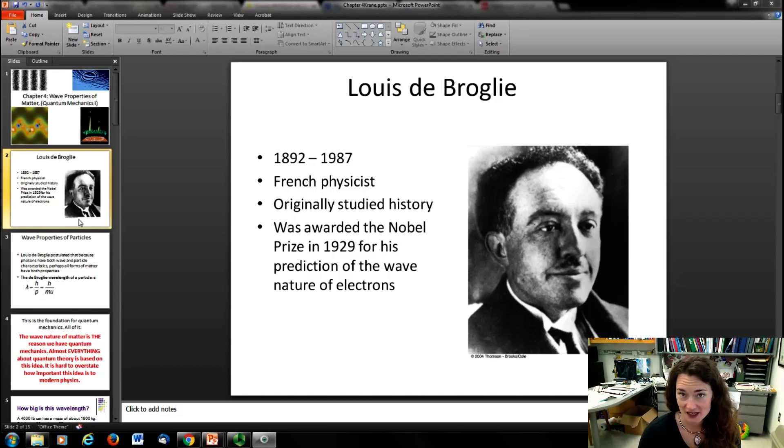He originally studied history, interestingly enough, but then he switched fields and went on to become a scientist. And he was awarded the Nobel Prize in 1929 for his prediction of the wave nature of electrons.